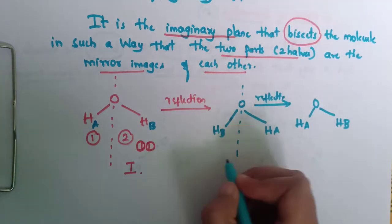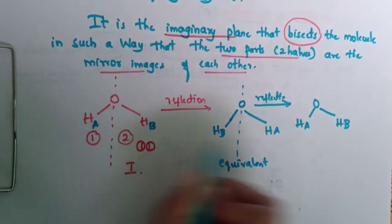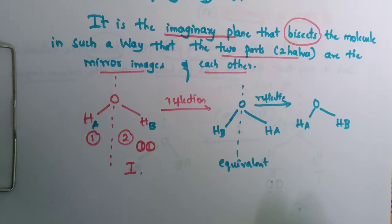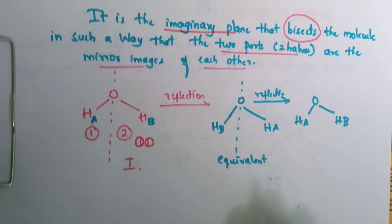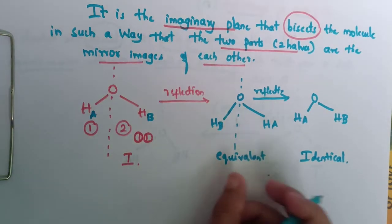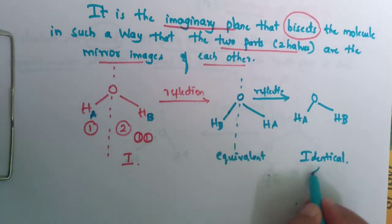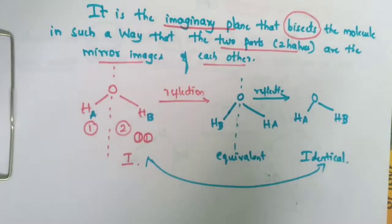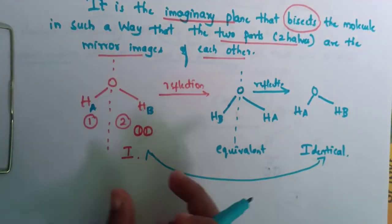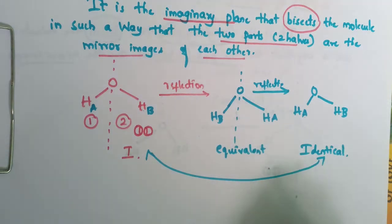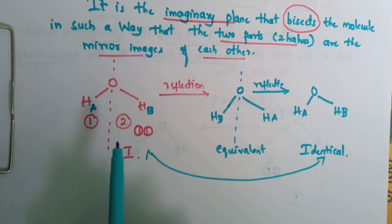After reflection, we obtain an equivalent configuration — meaning it is not the same as the first one. When the reflection operation is carried out twice (sigma squared), we get back an identical configuration — the same as the original. H_a is where H_a was, and H_b is where H_b was. This is what is meant by identical versus equivalent configuration; watch our previous group theory videos for more detail.